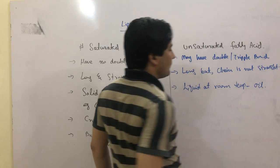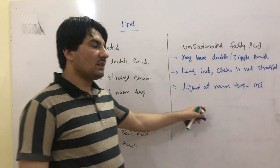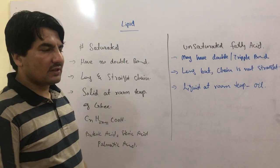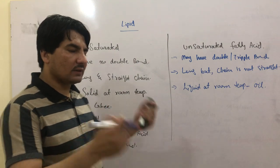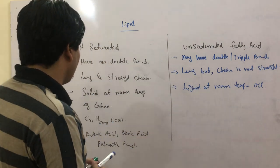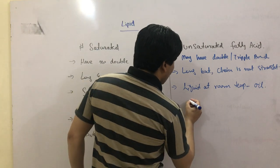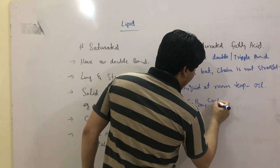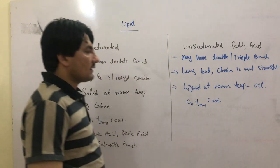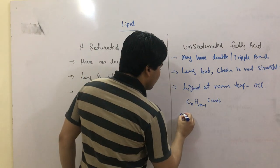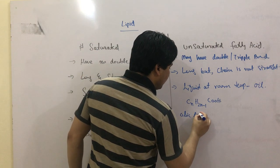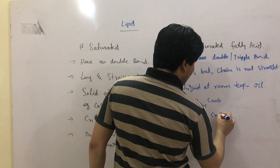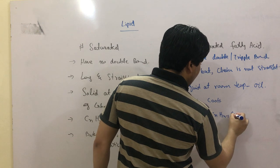For example, plant-based oils - they are liquid at room temperature. The formula is C_n H_{2n-1} COOH.